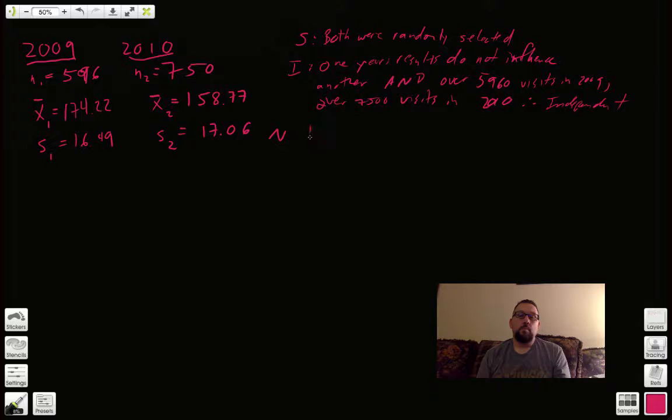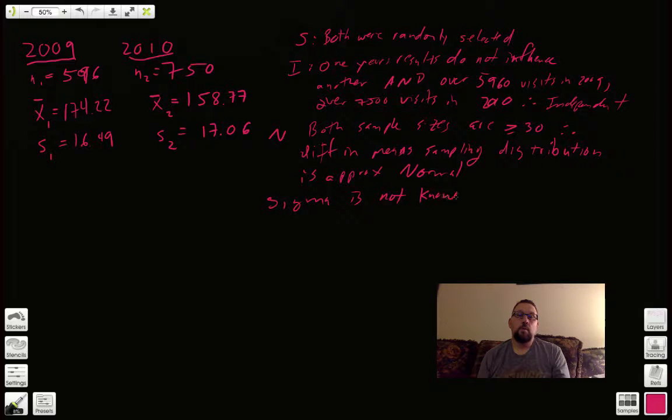And both sample sizes are at least 30. Therefore, difference in means sampling distribution is approximately normal. If sigma is not known, use two-sample t-interval.